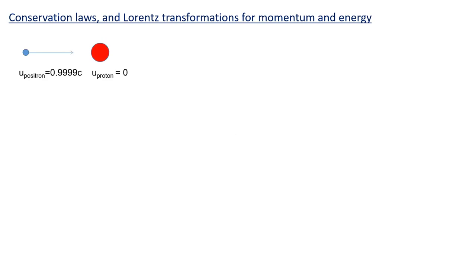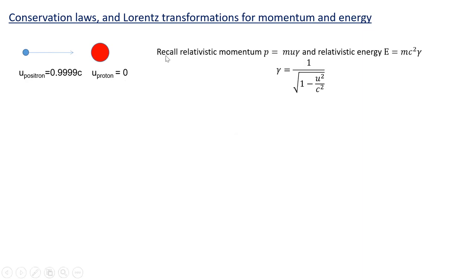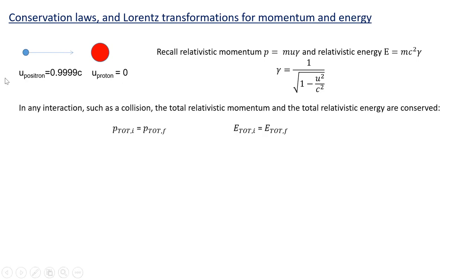We've seen the Lorentz transformations for position and time, but in this lecture we'll introduce the Lorentz transformations for momentum and energy. The collision we'll look at is a positron with a very high velocity of 0.999c moving to the right, encountering a proton which is initially at rest. Recall that the relativistic momentum is p = muγ, and the relativistic energy is E = mc²γ, where γ = 1/√(1 − u²/c²) and u is the velocity of the particle.